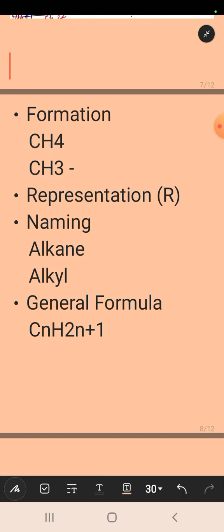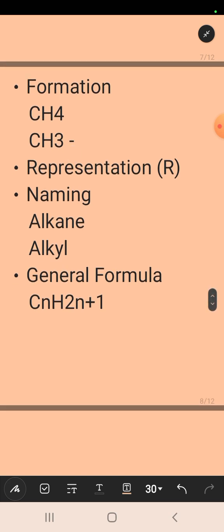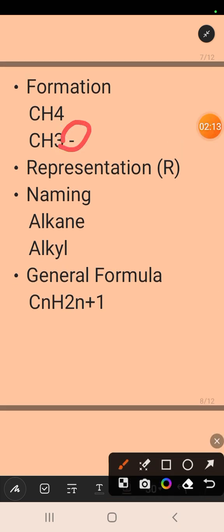A bond is represented here. Why? Because one electron that is unshared with any other atom is available on carbon. That is why this bond can be formed with any atom or group of atoms.